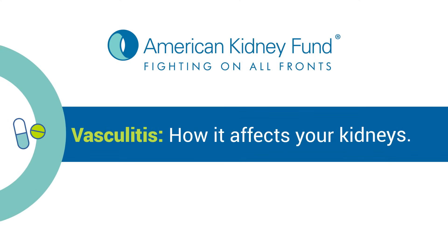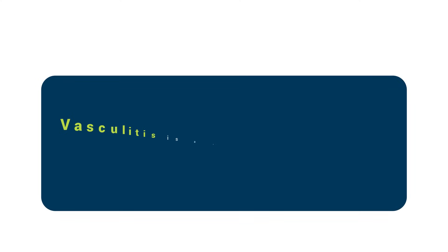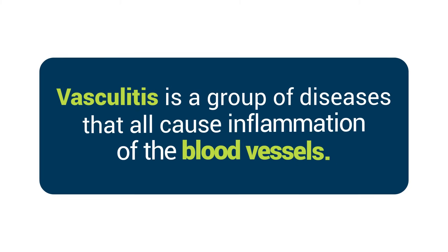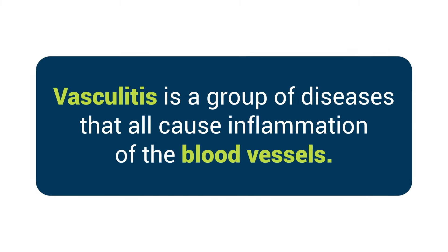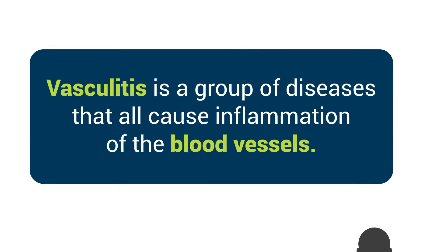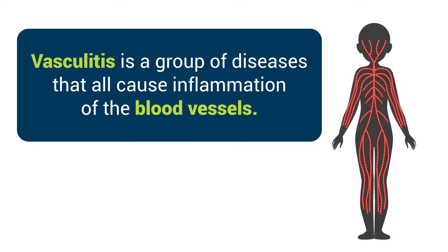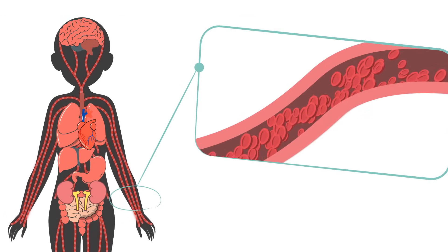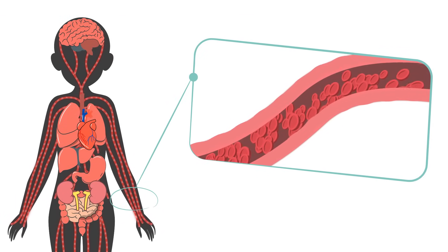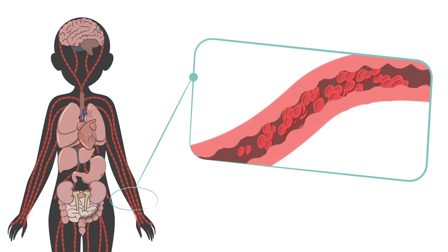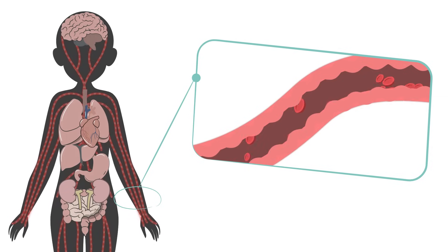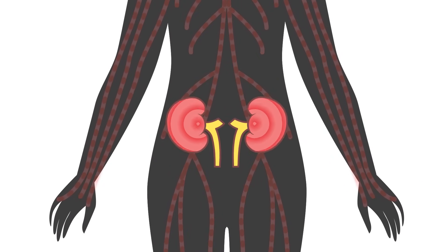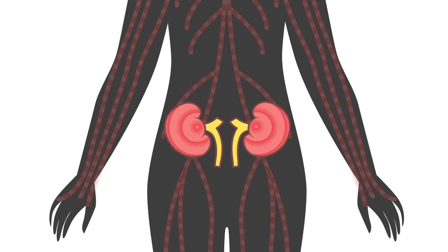Let's talk about vasculitis and how it affects your kidneys. Vasculitis is a group of diseases that all cause inflammation of the blood vessels like arteries, veins and capillaries. When blood vessels are inflamed, it's harder for blood to get through to organs and tissues, which can eventually damage organs and tissues. Vasculitis can affect different parts of the body, including the kidneys.